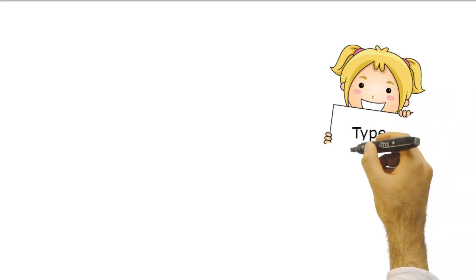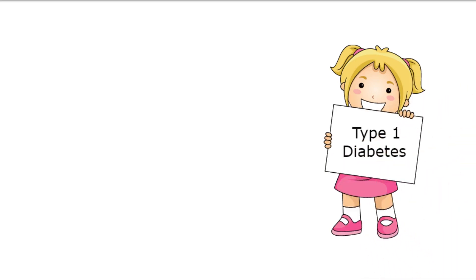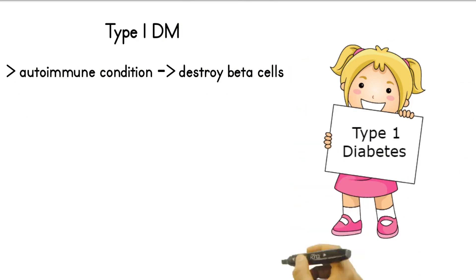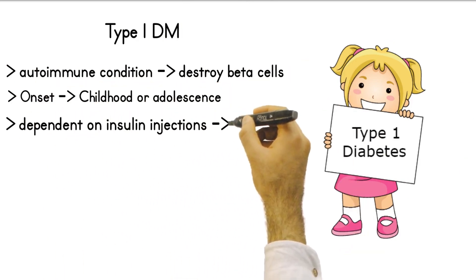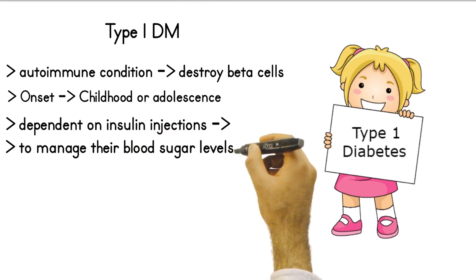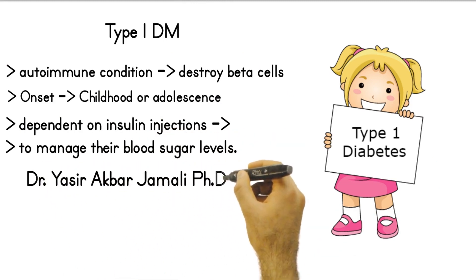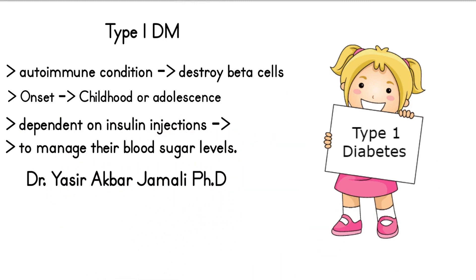Type 1 diabetes (T1D). Cause: Type 1 diabetes is an autoimmune condition where the immune system mistakenly attacks and destroys the insulin-producing beta cells in the pancreas. Onset: It often develops early in life, typically before the age of 30, and is commonly diagnosed in childhood or adolescence. Insulin dependency: People with type 1 diabetes are dependent on insulin injections or an insulin pump to manage their blood sugar levels.